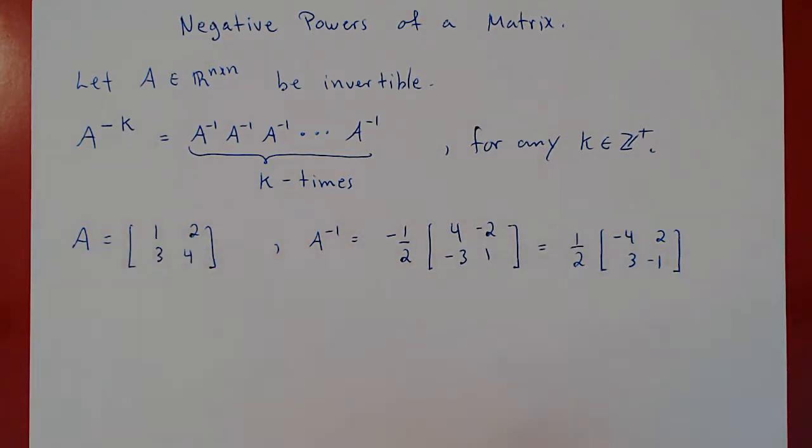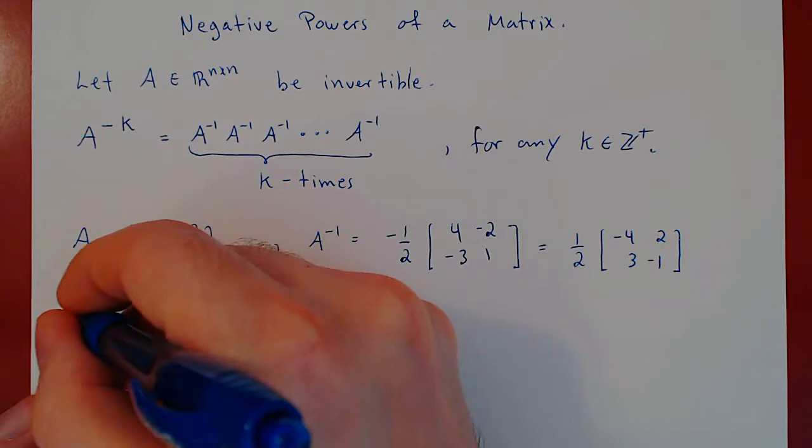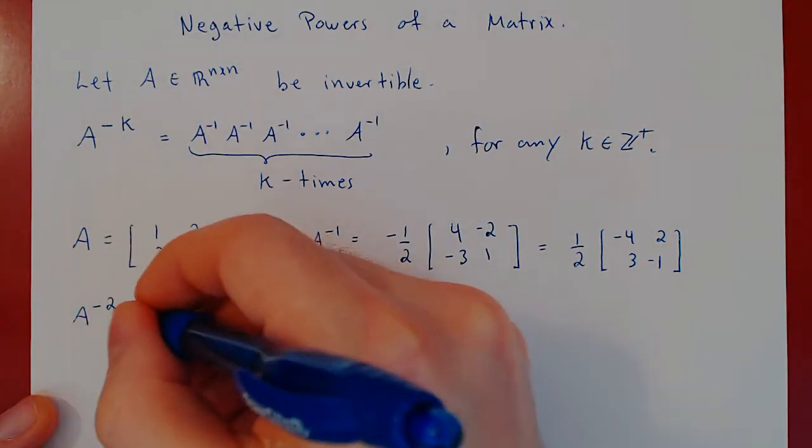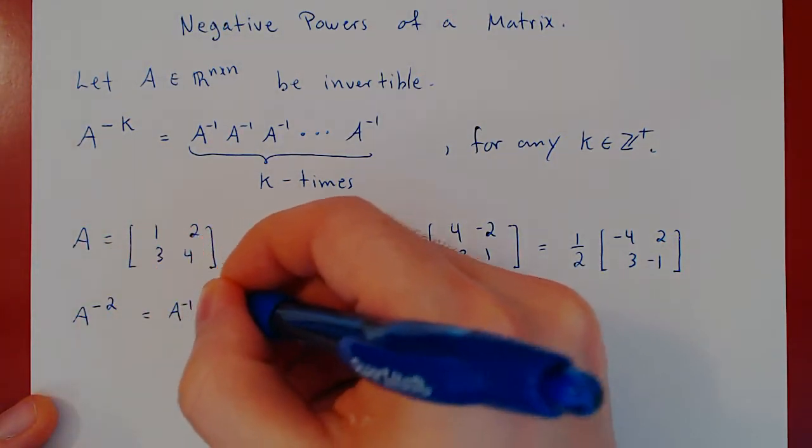For this 2 by 2 matrix, suppose we simply asked for A to the negative 2, well, that would be A inverse times A inverse.